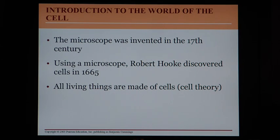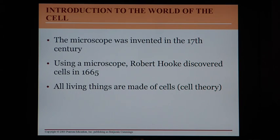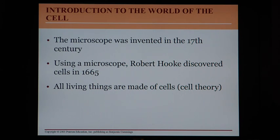The cell theory, in short: all living things are made up of cells, and cells can only come from the division of pre-existing cells. Your entire body — from a toenail to a hair cell to an eye cell to a heart cell — every part of you is a combination of one or more cells.